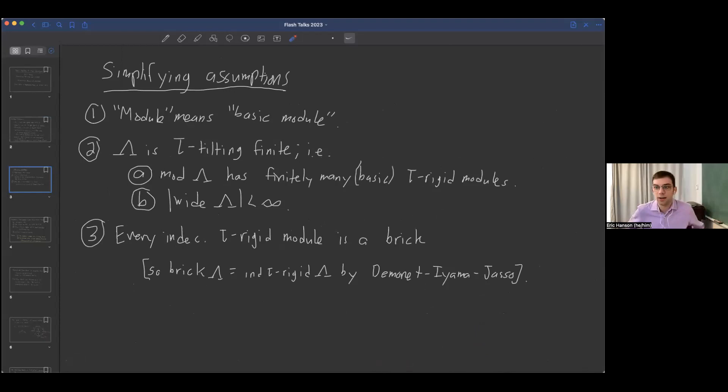Since this is only a 10-minute talk, I'm going to make some simplifying assumptions. When I say module, I mean basic module. I'm going to assume my algebra is tau tilting finite, so there are finitely many basic tau rigid modules and finitely many wide subcategories. The last assumption is pretty strong, but I'm going to assume that every indecomposable tau rigid module is also a brick. By the brick-tau rigid correspondence of Demonet-Iyama-Jasso, this says that my bricks and my indecomposable tau rigid modules are the same. This is just to simplify the exposition.